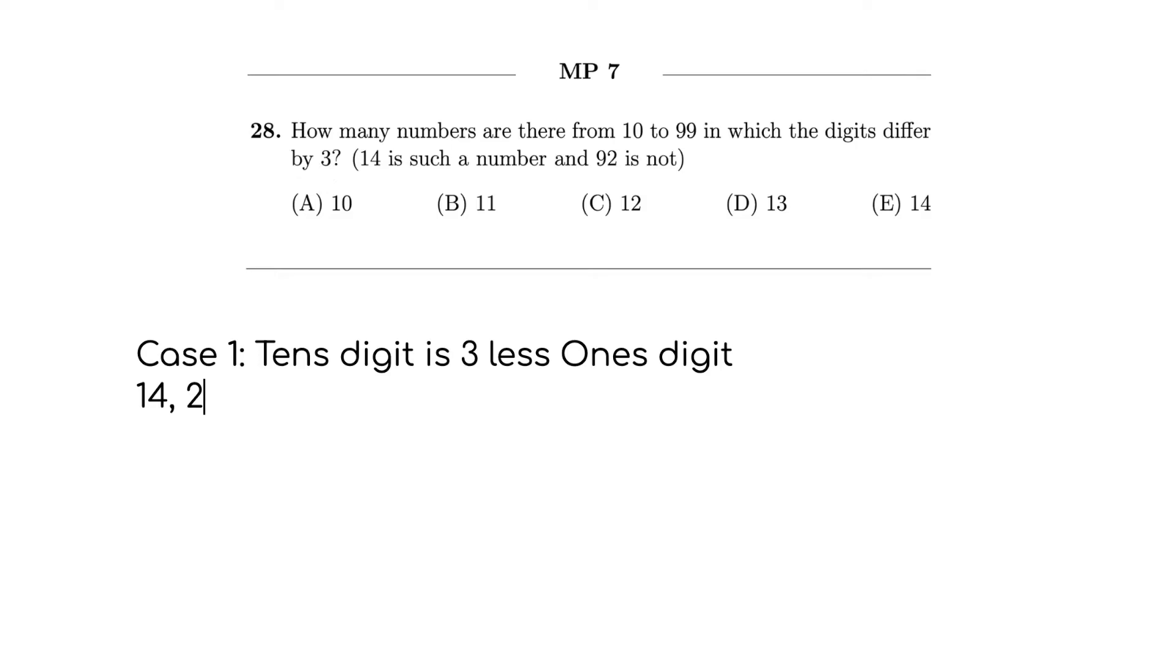14. And then next, if we have two at the tens digit, then it's going to be five at the ones digit, because we're adding three, and then we keep doing that. 36, 47, 58, 69. And now we can't do seven, ten, because ten is not a digit. So that means we are done.